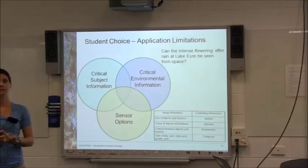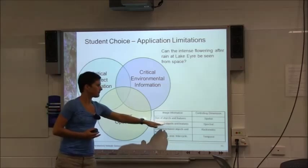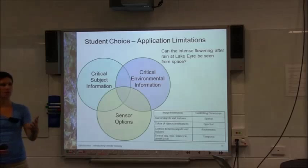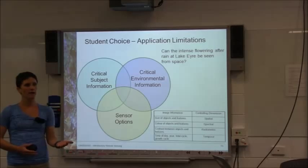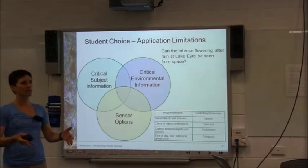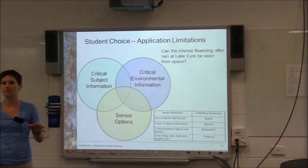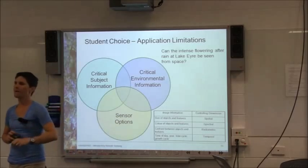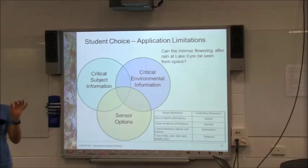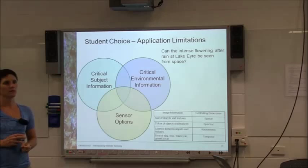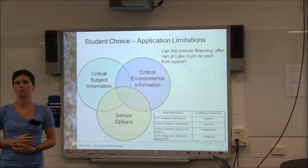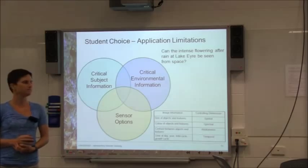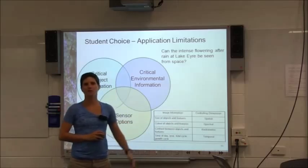What do I need to know in terms of colour? I would potentially go out and measure the spectral signature of the flowers and things around them, because I want to know what the flowers look like but I want them to be different from other things, so I need to know what other things that could be confused with them look like. That's my spectral information. I want to work out the smallest amount of spectral information required — can I use just red, or do I need blue, green, red, and near infrared? How much of that information is required? That tells me whether I need hyperspectral or multispectral data.